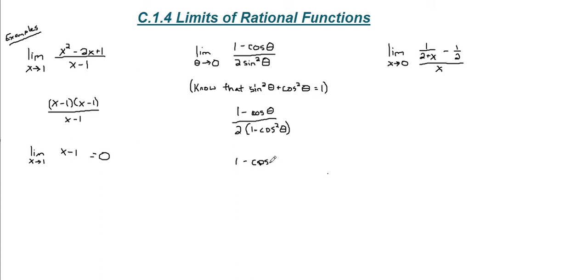Let me write this numerator again. 2, 1 plus cosine theta, and 1 minus cosine theta. That is the difference of squares.